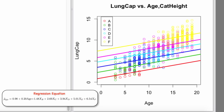We'll get to discussing interaction or effect modification in later videos. For now, let's recall the regression equation and relate this to what we see in this plot. The intercept of 0.98 is the estimated mean lung capacity for someone in height category A, our reference category, at age 0. The age effect of 0.2 tells us that for each additional unit increase in age, we expect an increase of 0.2 in mean lung capacity. The coefficient for height category B of 1.48 tells us the change in mean lung capacity for someone in height category B relative to height category A, the reference — the regression line for category B increases by 1.48 relative to category A.